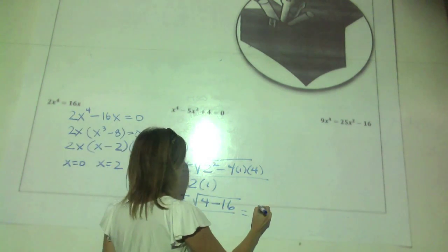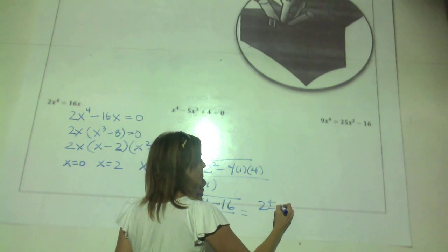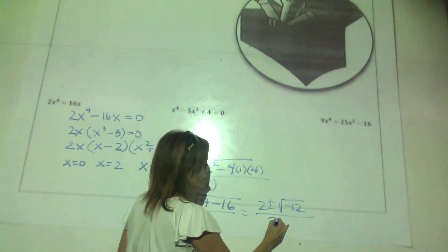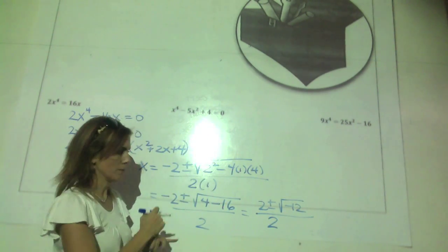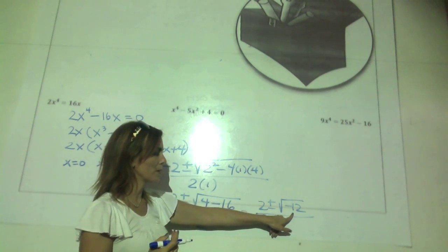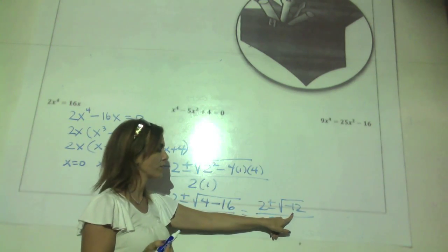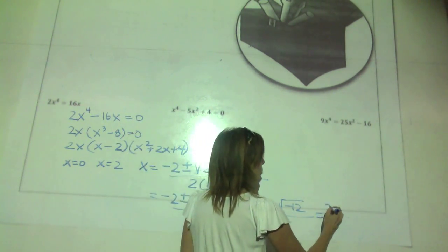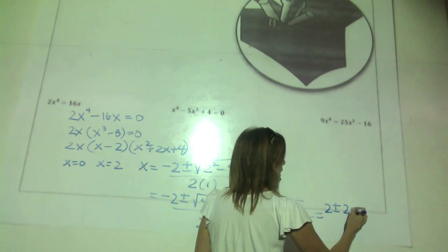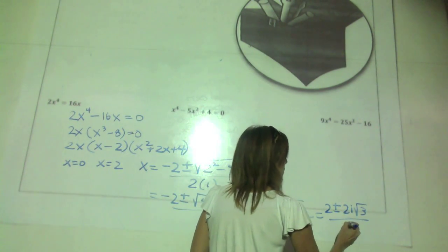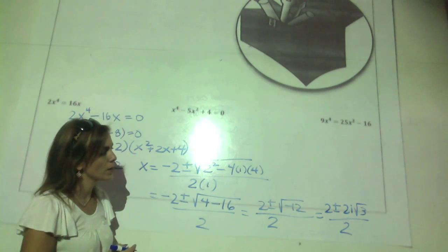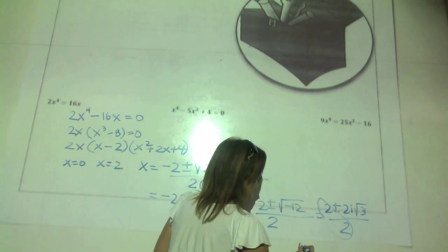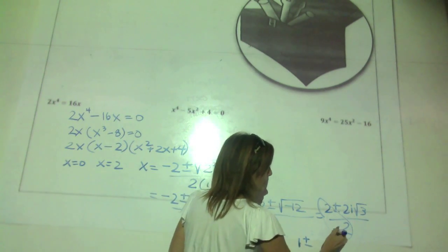Taking the GCF out of the two groups, we have 3x plus 2 times x squared minus 4 equals zero. The difference of squares factors a bit more: 3x plus 2 times x plus 2 times x minus 2 equals zero. Fully factored, we find the solutions: x equals negative 2 thirds, x equals negative 2, and x equals 2. Our solution set is negative 2, negative 2 thirds, and 2.